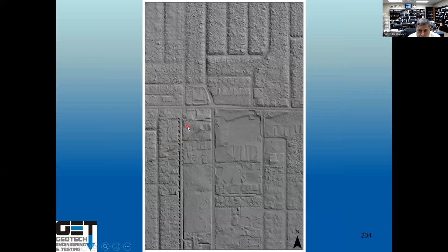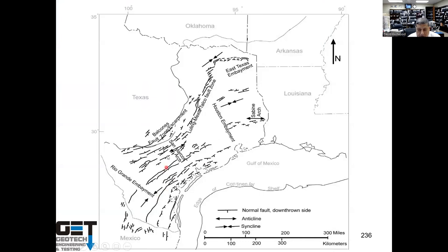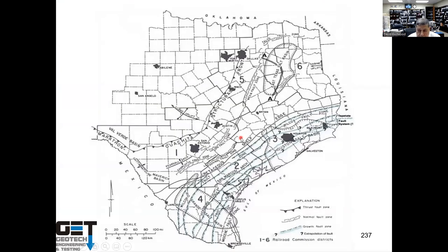This is the Long Point Fault going right through a property — I wouldn't buy that property to build a school or even condos on it. You've got to stay away from the fault line. These are fault maps for Texas — we have them in Dallas, San Antonio, and Austin, but those faults are not active so you can build over them. In Houston and Beaumont areas, you've got to check for faulting every time you do a feasibility study for any kind of school project. Some faults in various ISD areas are shown in these LIDAR maps.